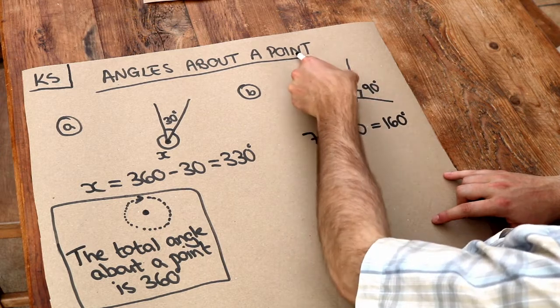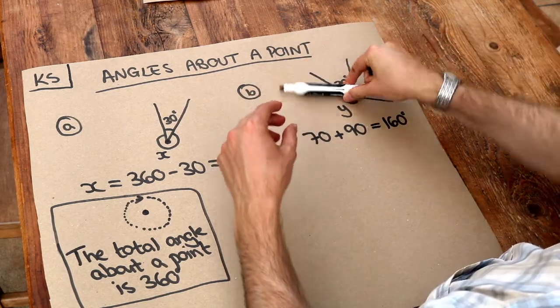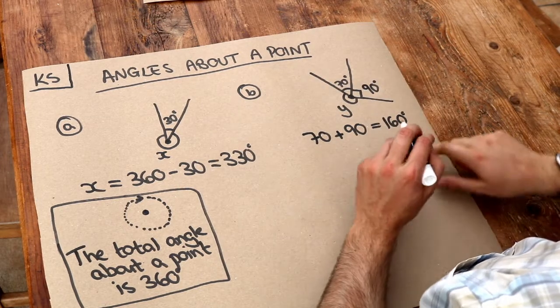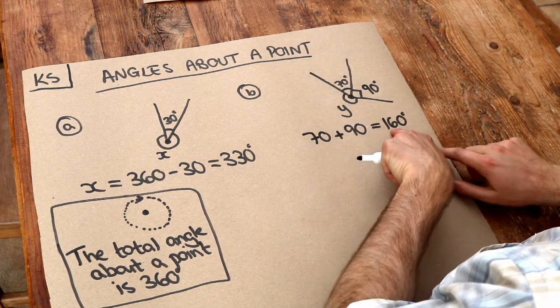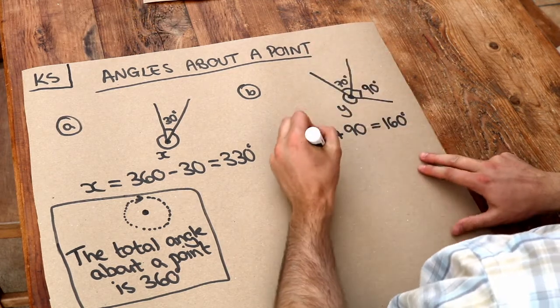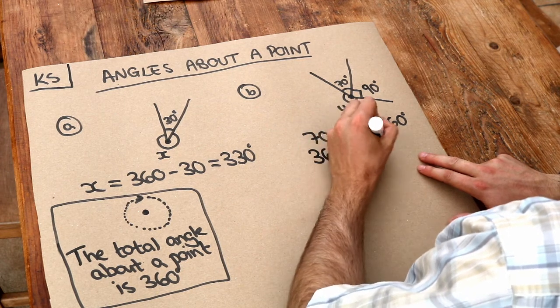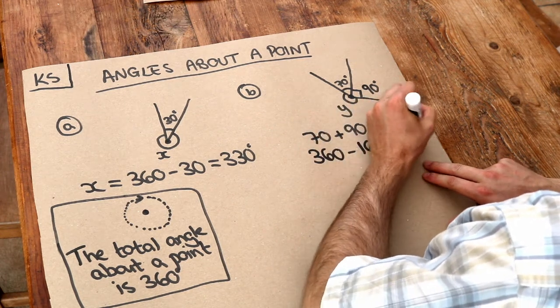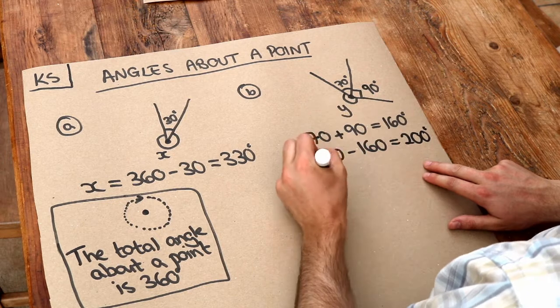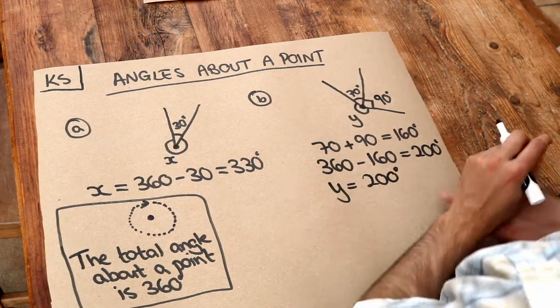So these two angles combined add up to 160 degrees, and we need to know what's left in that full spin. So they have to all add up to 360, so we just take away that total so far from 360 to see what's left. So we do 360 minus 160, and that's 200 degrees. So y is 200 degrees, and that is it.